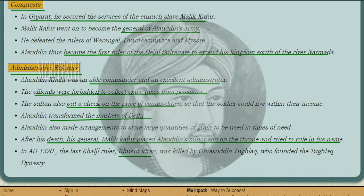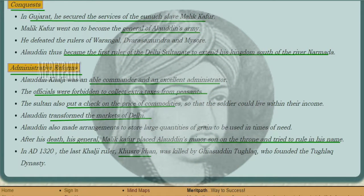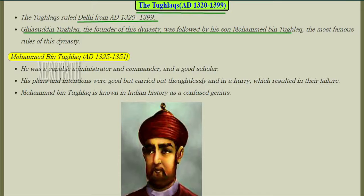Khusro Khan, the last Khalji ruler, was killed by Ghiyasuddin Tughlaq, who then founded the Tughlaq dynasty. The Tughlaqs ruled from AD 1320 to AD 1399, with Ghiyasuddin Tughlaq as the founder of the dynasty.